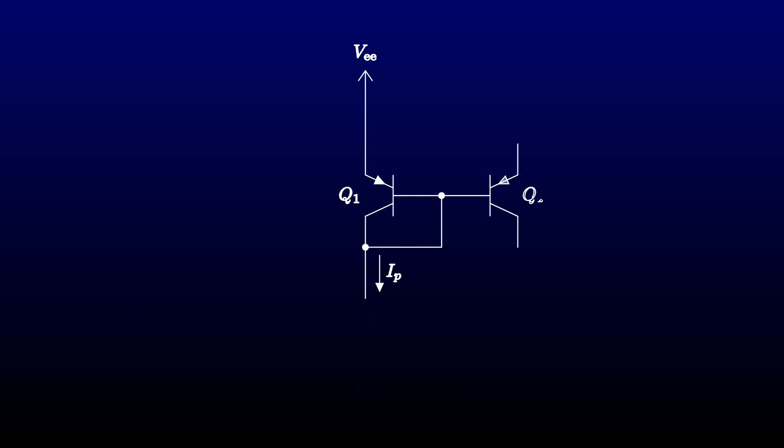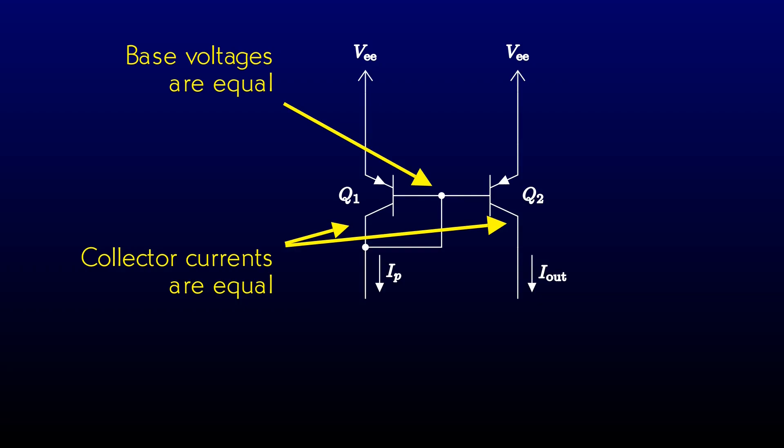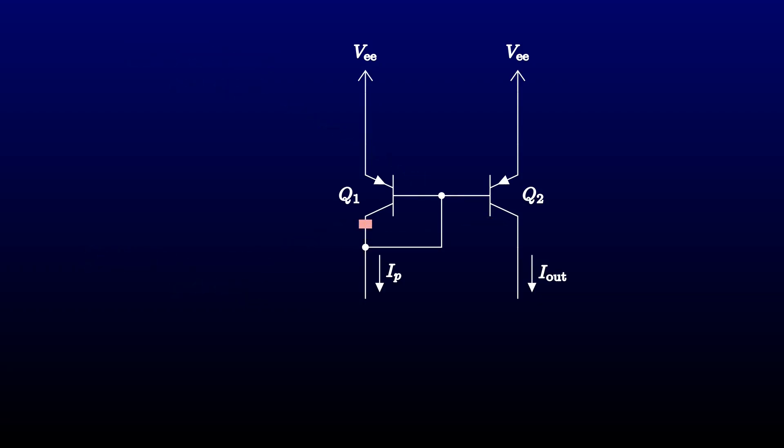With all this analysis behind us, the output transistor is almost insultingly simple. The bases of the two transistors are tied together, so of course the base voltages are equal. That means the collector currents of the two transistors are also equal. So the two transistors are going to have equal collector currents.